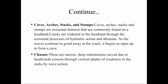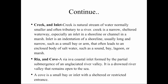Chasms are narrow deep indentations formed by headward erosion through vertical planes of weakness in rocks by wave action. A creek is a natural stream of water, normally smaller and often a tributary to a river — a narrow or sheltered waterway, especially an inlet in a shoreline or channel in a marsh. An inlet is an indentation of a shoreline, usually long and narrow, such as a small bay or arm that often leads to an enclosed body of salt water such as a sound, bay, lagoon, or marsh. A ria is a coastline inlet formed by the partial submergence of an unglaciated river valley — a drowned river valley that remains open to the sea. A cove is a small bay or inlet with a sheltered or restricted entrance.